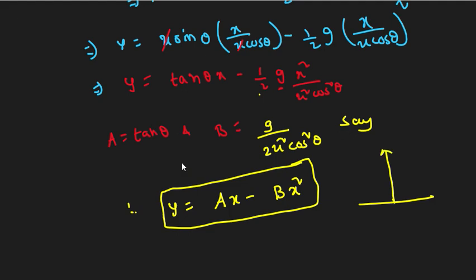If we draw different values of x and y, then we get a shape in the parabolic form. This confirms that the trajectory of oblique projection follows a parabolic shape.